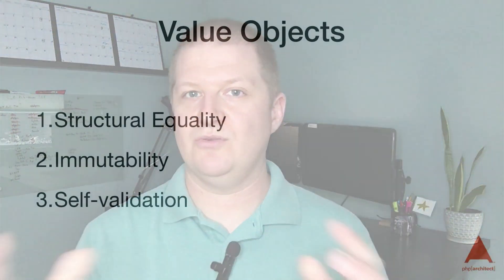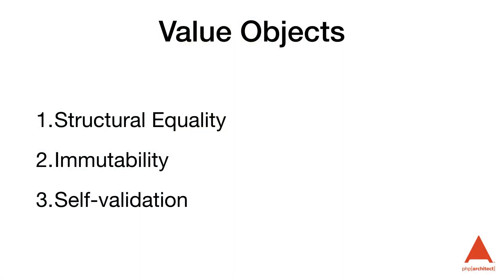As a quick recap for this section, when we're designing value objects, we're looking at three main characteristics: structural equality, immutability, and self-validation.